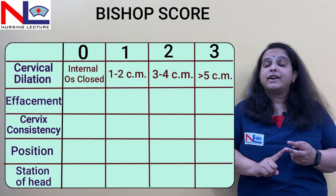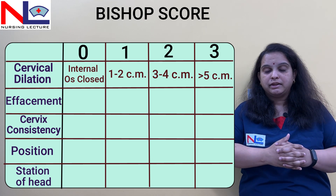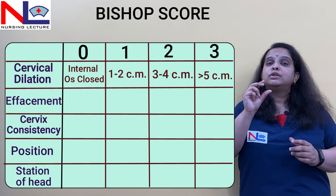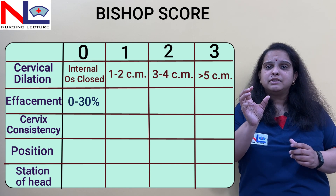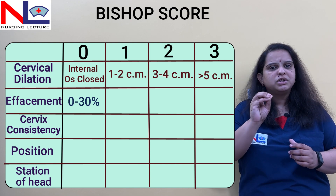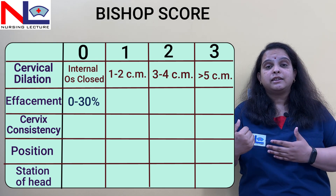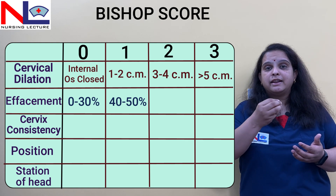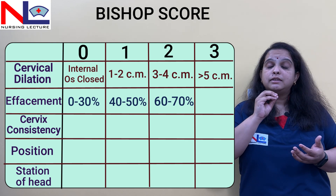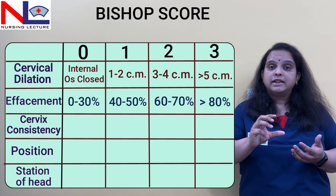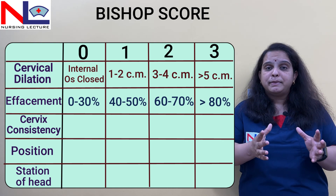The second parameter is cervical effacement — how much the cervix has taken up and merged into the lower uterine segment, reducing its length. Effacement is measured as a percentage. If 0 to 30 percent effaced, we score 0, meaning the cervix is not sufficiently effaced. From 40 to 50 percent, we score 1. From 60 to 70 percent, we score 2. If 80 percent or more effaced, we score 3, indicating good effacement.